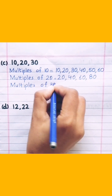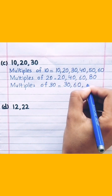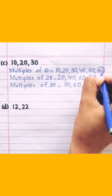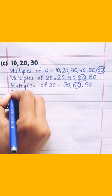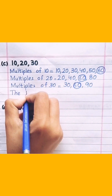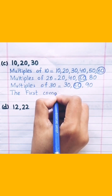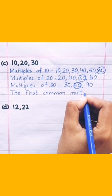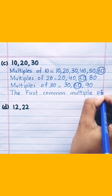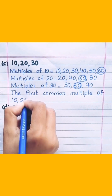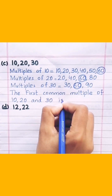Multiples of 30: 30, 60, 90. The first common multiple of 10, 20, and 30 is 60.